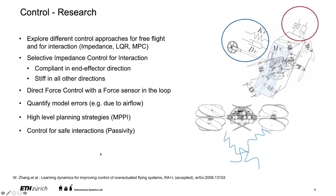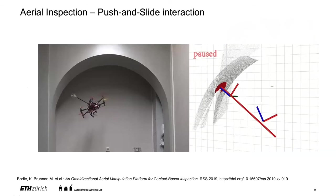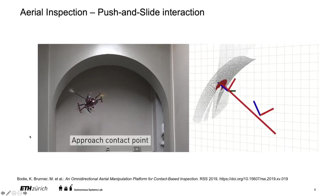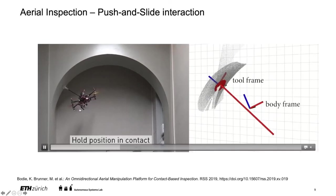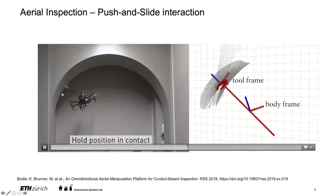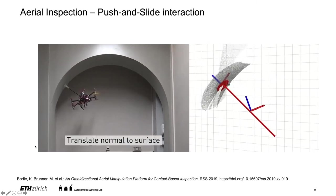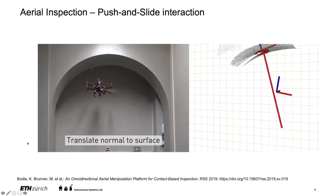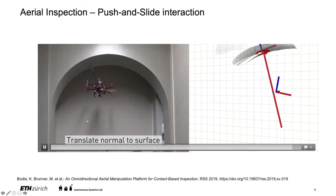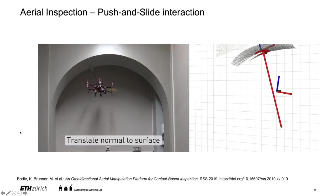For aerial inspection — one of the first tasks we worked on — we perform standard push-and-slide interactions. We use live feedback from an onboard depth camera and a monocular camera to estimate distance to a surface, model the mesh of the surface, and create a live trajectory to follow along the surface with the overactuated vehicle. The platform's whole orientation adjusts so it's always perpendicular to the arc we found in one of the ETH buildings, rolling along the surface while keeping contact.